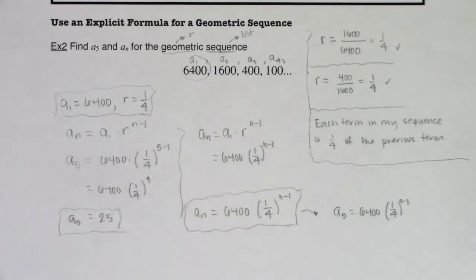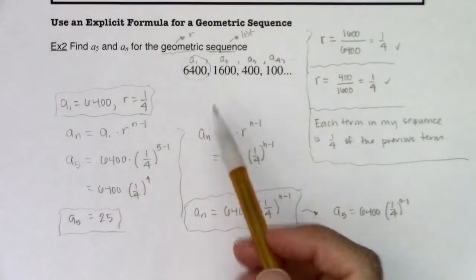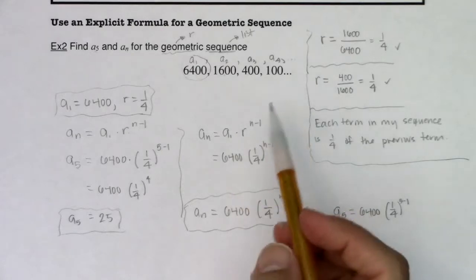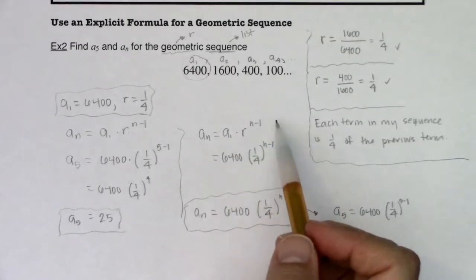meaning you have your starting point but you spot this common ratio, you're allowed to use this formula that a sub n is equal to a sub 1 times r to the n minus 1.